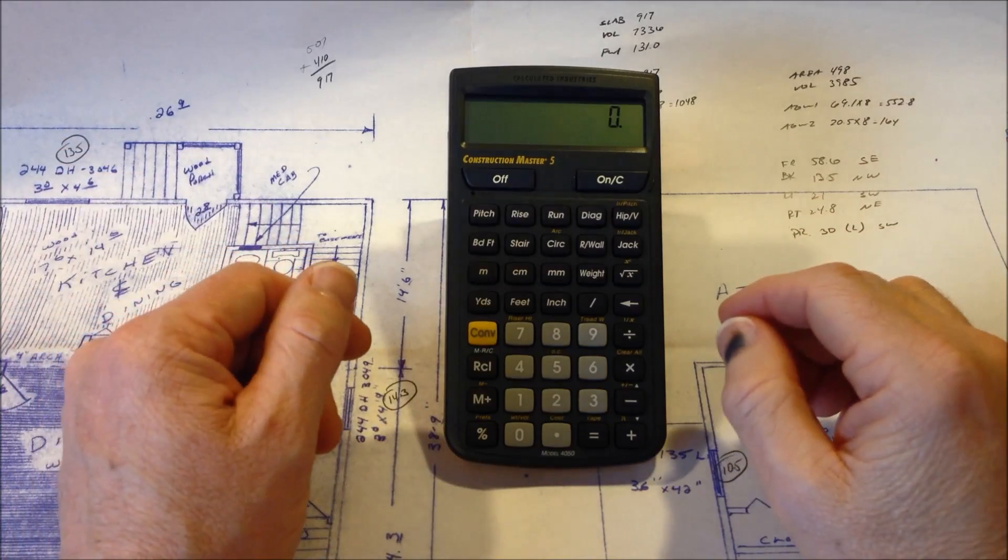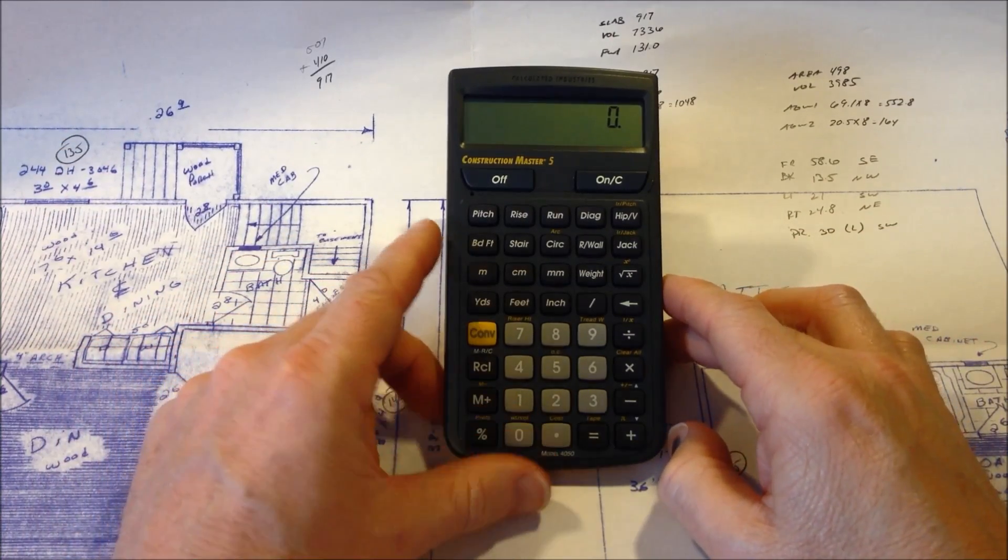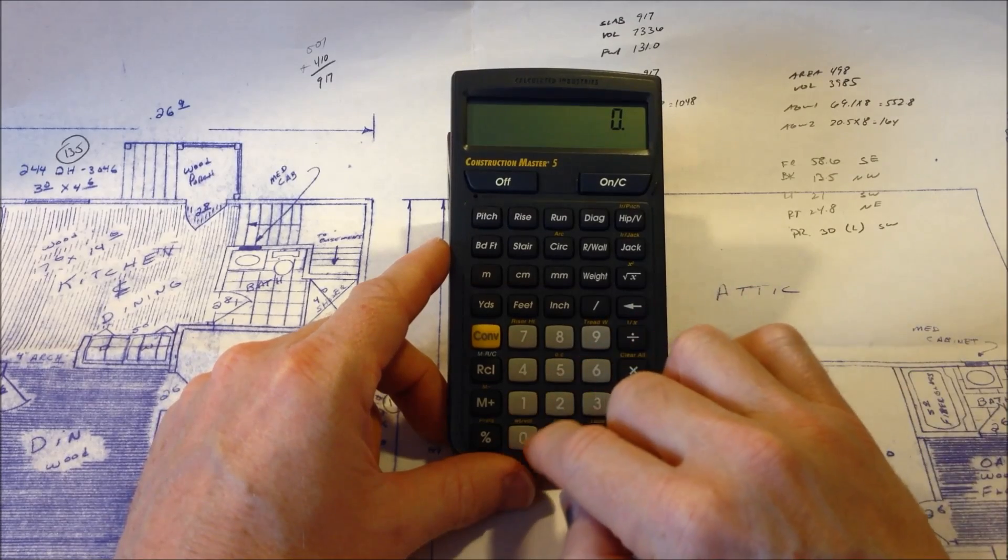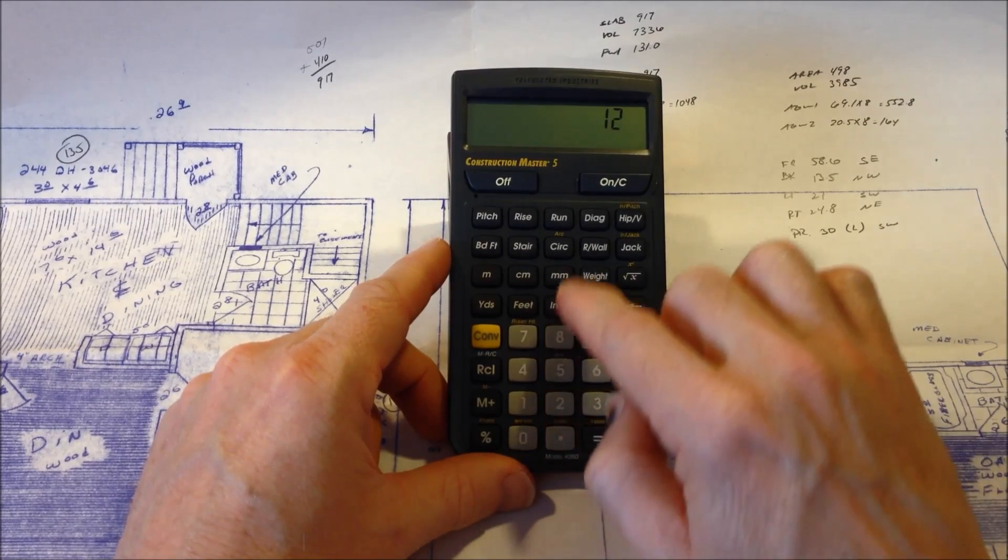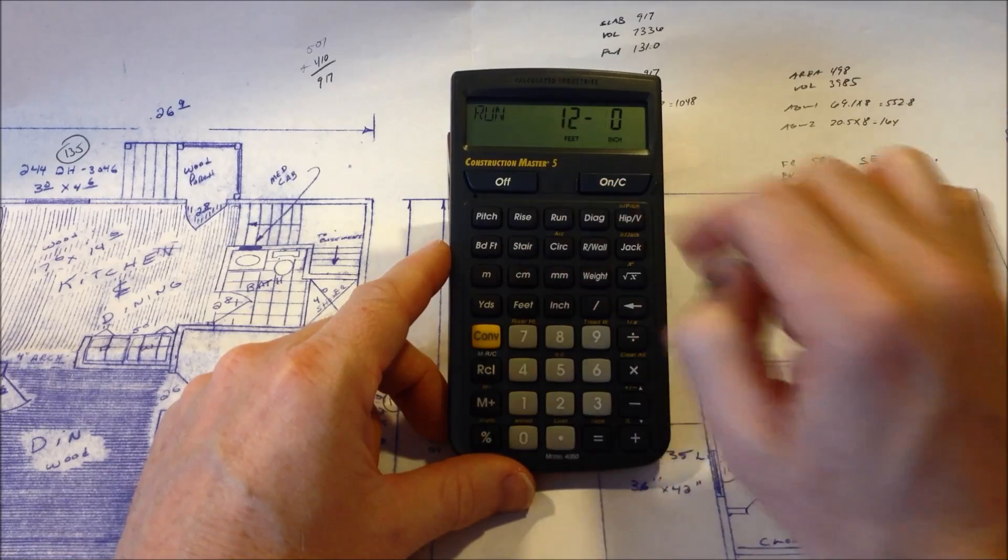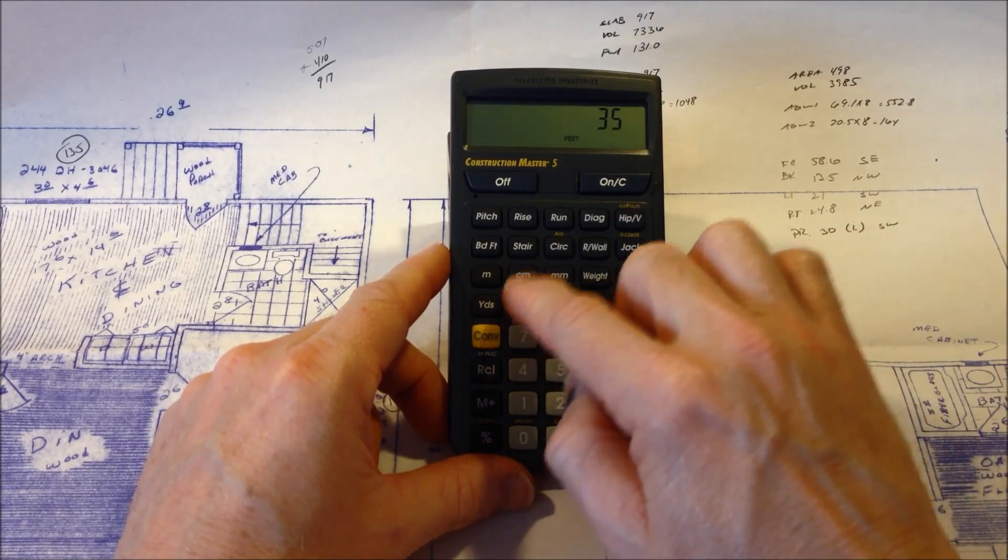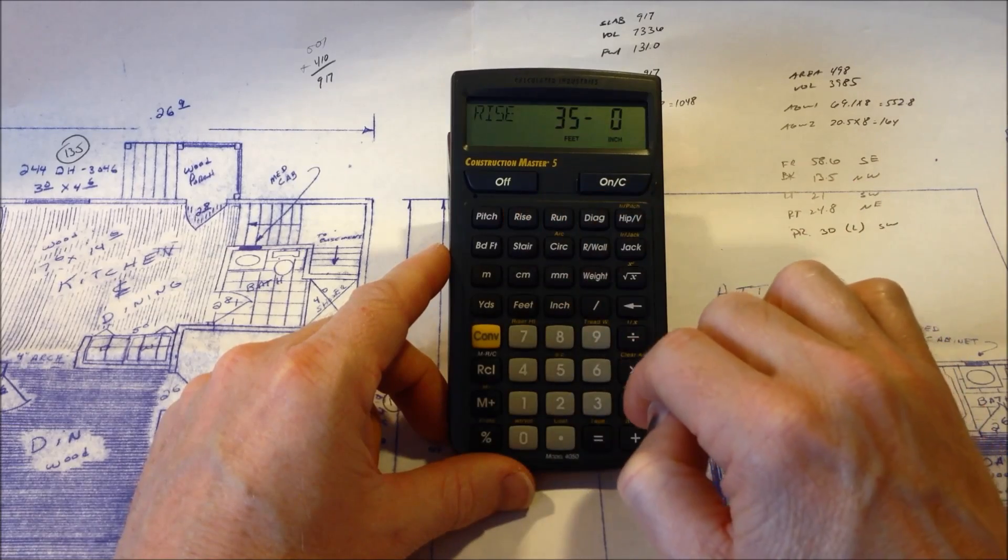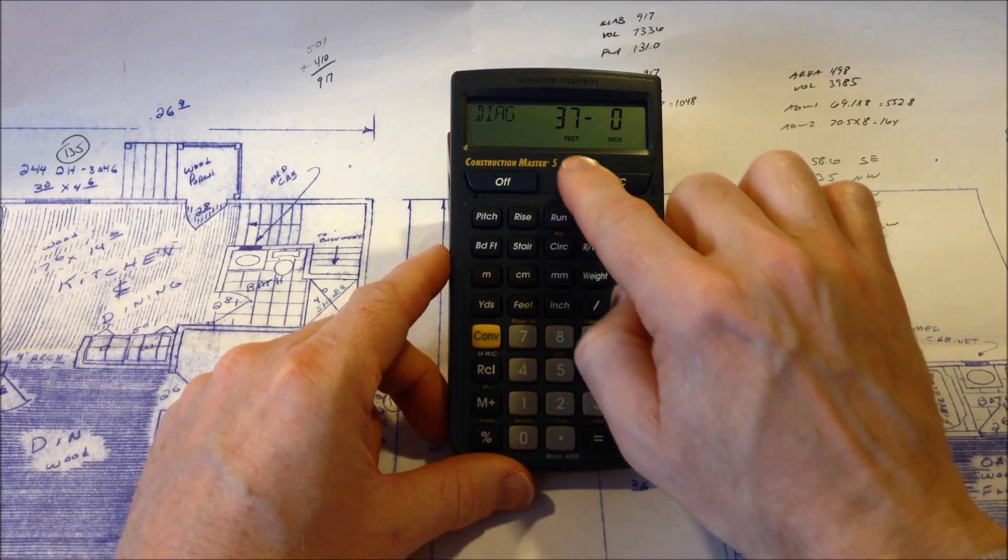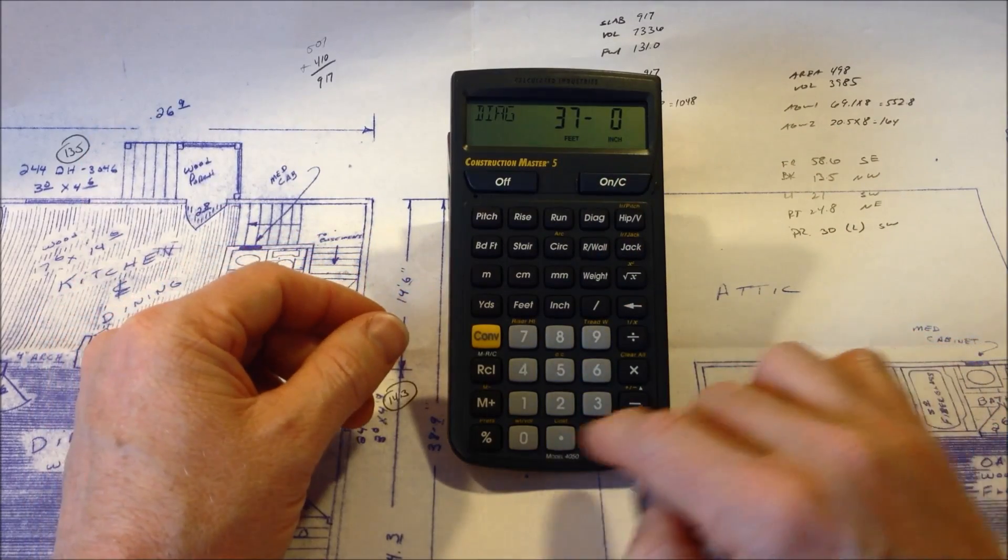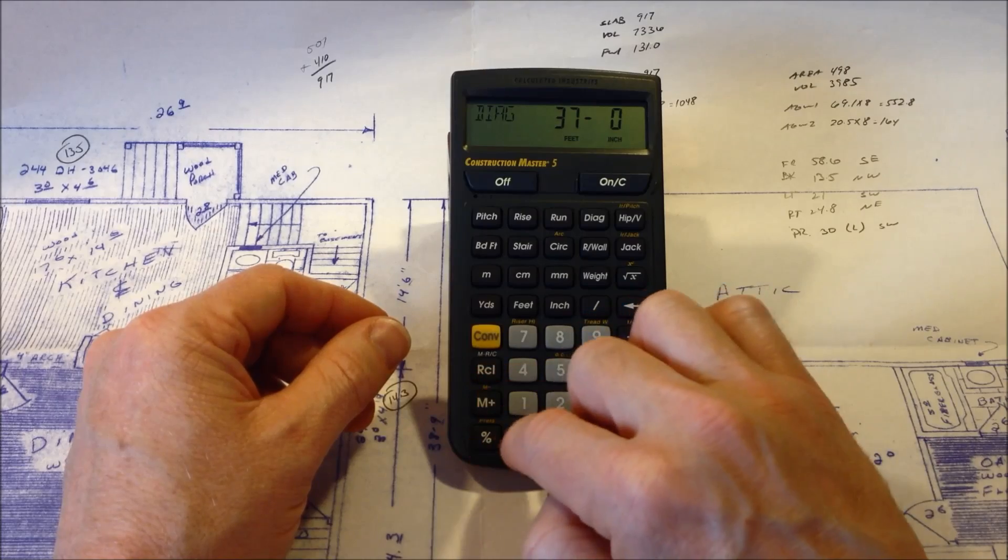Another function I use on a regular basis is the Pythagorean theorem. And this calculator has the theorem built into it. So we can put in, say, a 12 feet of run and 35 feet of rise. When we hit the diagonal button, it will tell us what the diagonal is of the hypotenuse. It's pretty handy.